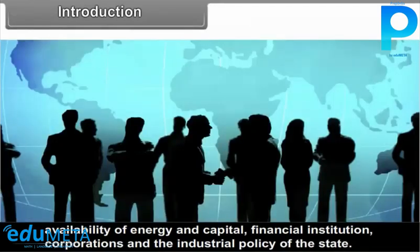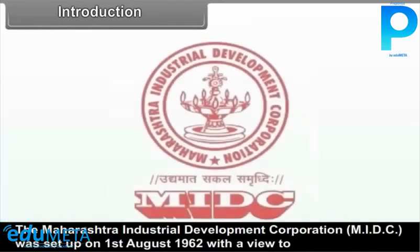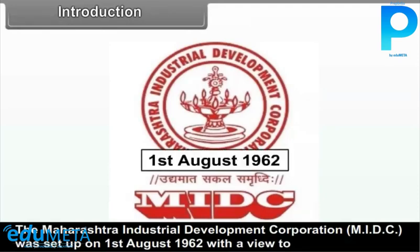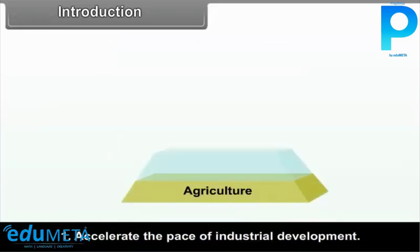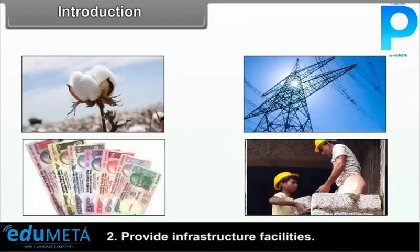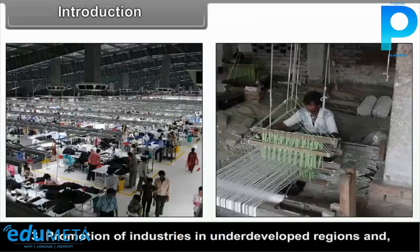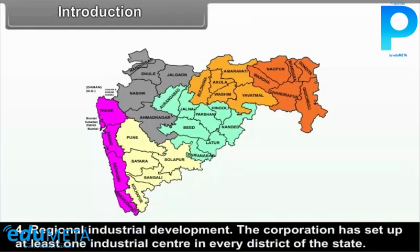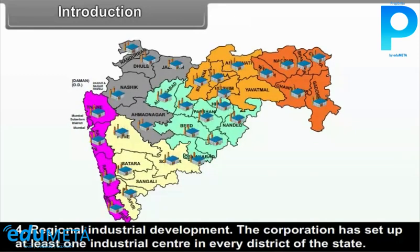The Maharashtra Industrial Development Corporation was set up on 1st August 1962 with a view to accelerate the pace of industrial development, provide infrastructural facilities, promotion of industries in underdeveloped regions and regional industrial development. The corporation has set up at least one industrial centre in every district of the state to achieve regional balance.